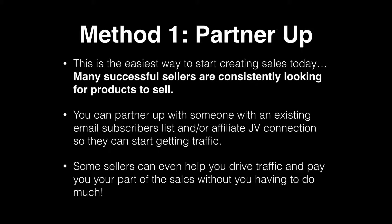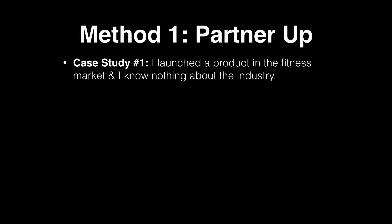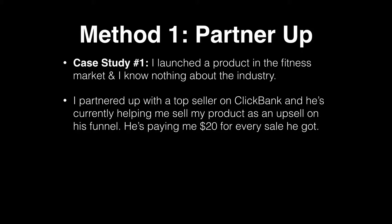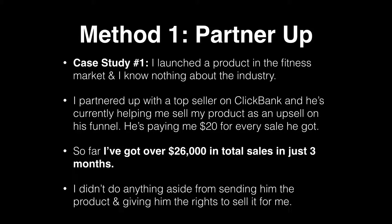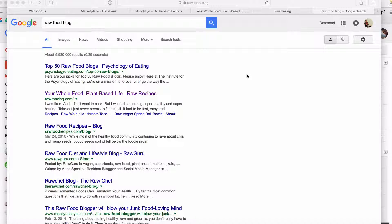Some sellers can help you drive traffic and pay you your share of sales without you having to do much besides creating the product. Case study: I launched a product in the fitness market — I know nothing about that industry. I partnered with a top seller on Clickbank who is selling my product as an upsell in his funnel, paying me $20 per sale. So far I've gotten over $26,000 in total sales in just three months, just from sending him the product and giving him the rights to sell it. One favorite way to find a partner is to reach out to bloggers or influencers in your market — forum owners or passionate content creators.